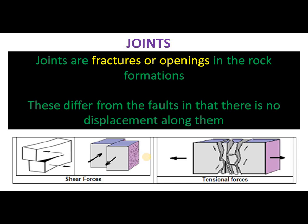Another structural feature is joints, which are usually noticed in almost all rocks. These joints are fractures or openings, and they are different from faults in that there is no displacement along them. In a fault, there is displacement, whereas in the case of joints, there is no displacement. This is the difference between a fault and a joint.